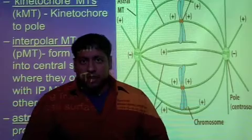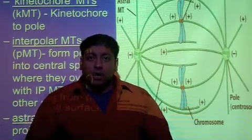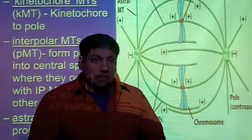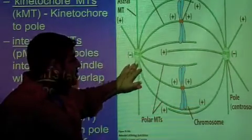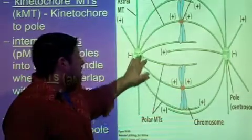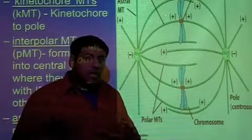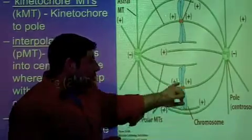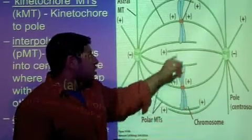There are three types of microtubules that are produced from the centrioles. We're going to see the kinetochore microtubules. These are the microtubules coming from the centriole that will bind to the kinetochore. Remember, the kinetochore is that central protein found at the centromere or the central region of the chromosomes.